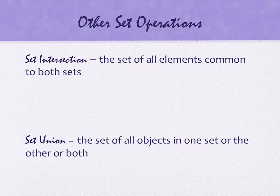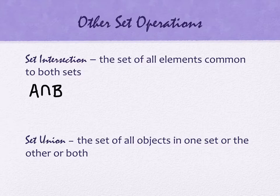The first one is called a set intersection. A set intersection is the set of all elements common to both sets. I want to show you both notationally what this looks like, what it means. The intersection is an upside down U, or you can think of it as looking kind of like a lowercase n for intersection. So we would write A upside down U, intersect B.